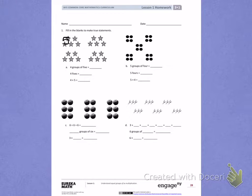5, 10, 15, 20. Four groups of five equals 20.